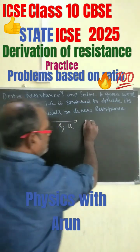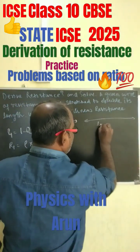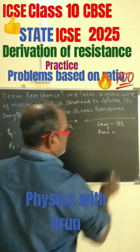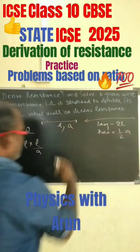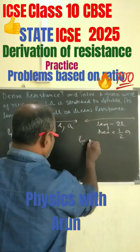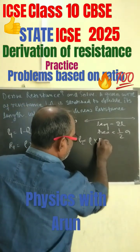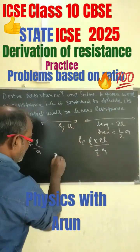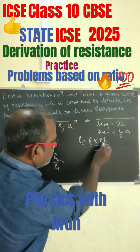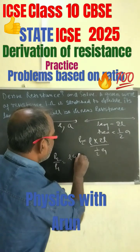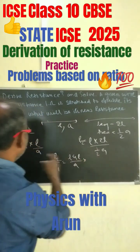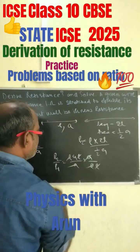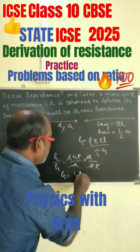Now, when the length of the wire is stretched to 2l, so length equals 2l, then the area of the cross-section becomes half of a. So R2 equals rho into 2l by half a. Dividing R2 by R1, we get R2 by R1 equals rho times 4l by a, into a by rho l. The rho, l, and a terms cancel out, giving R2 equals 4 R1.